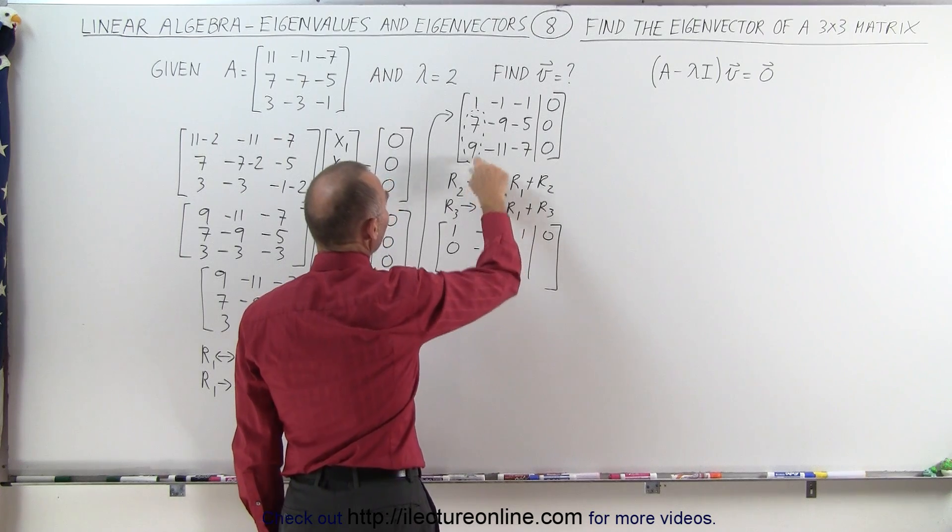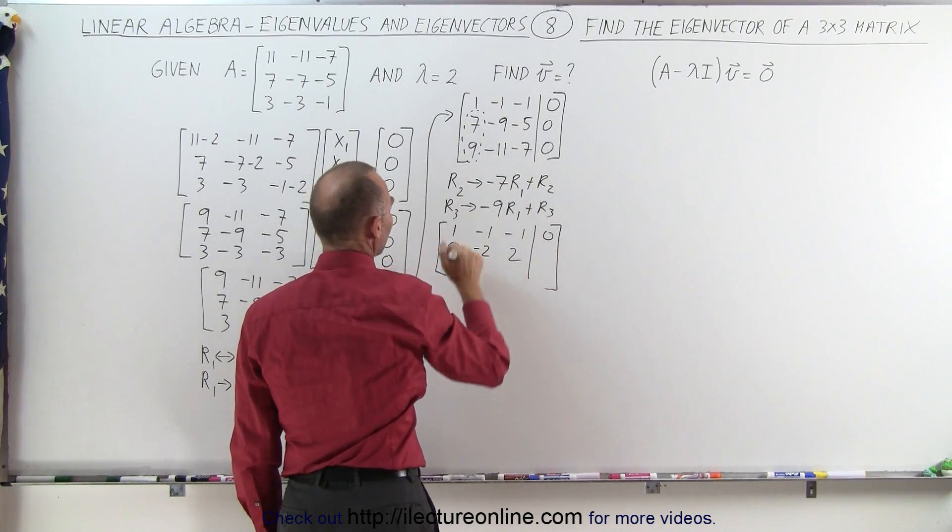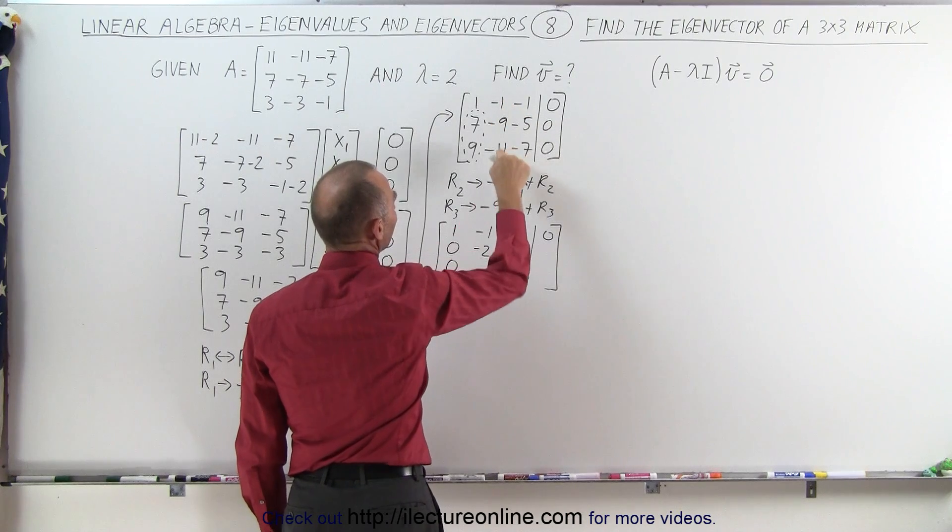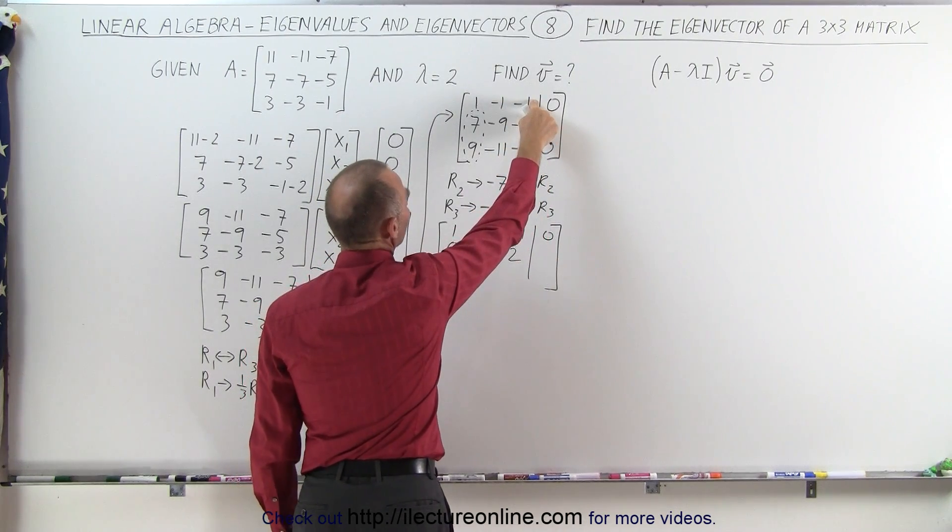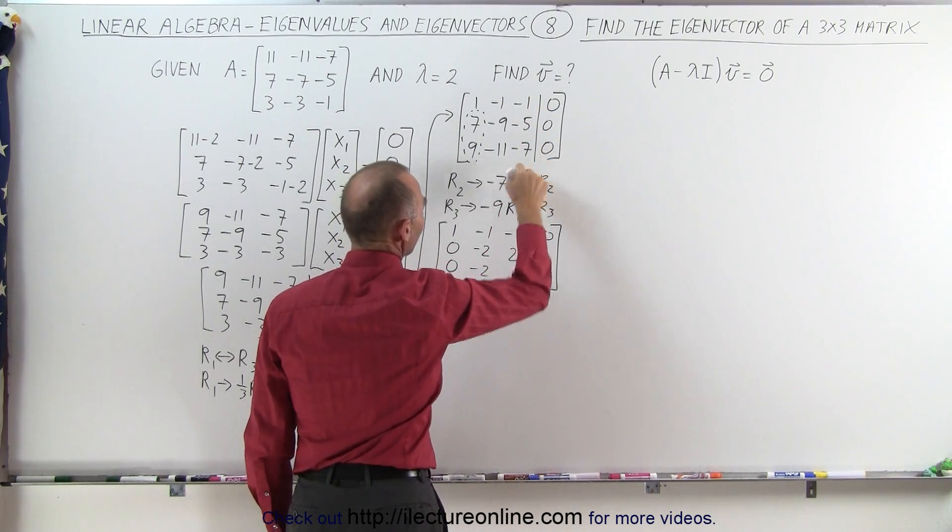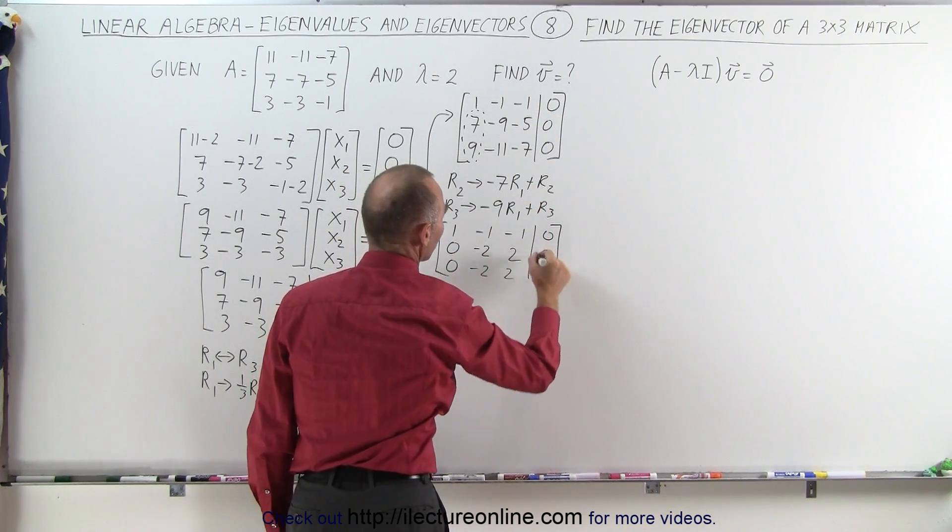For the third row, minus 9 times this, added to this, gives me 0. Minus 9, that's a plus 9, added to minus 11 is a minus 2. Minus 9 times this is a plus 9, added to minus 7 is a plus 2. And of course, we have 0s there.